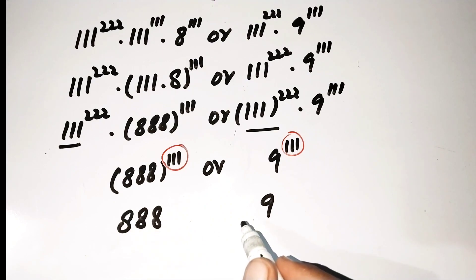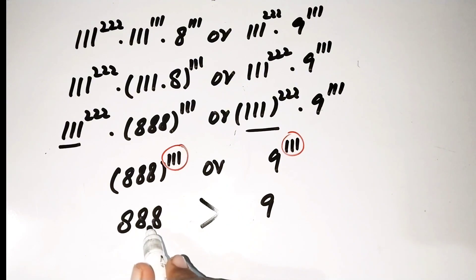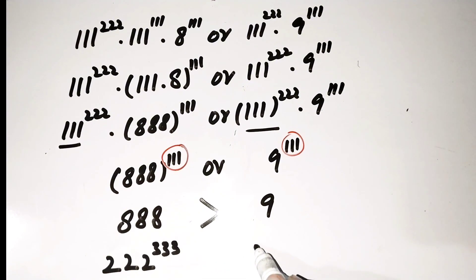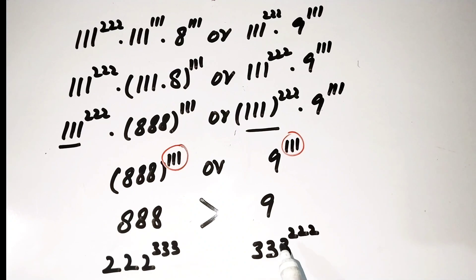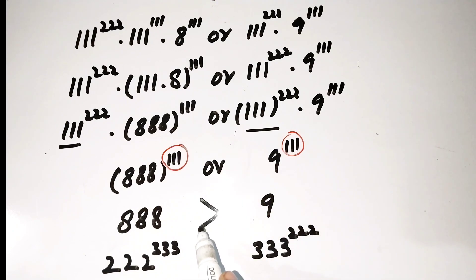We can see that 888 is greater than 9, so we write the greater-than sign here. According to our original question, our values were 222^333 and 333^222, and by these simple calculations we have proved that 222^333 is greater than 333^222.